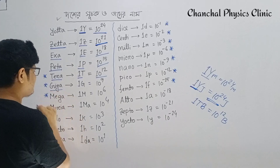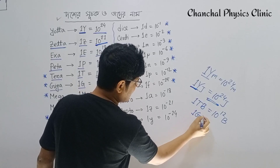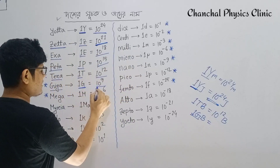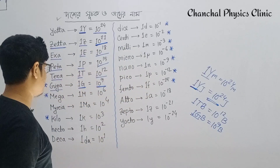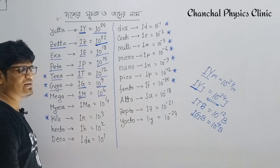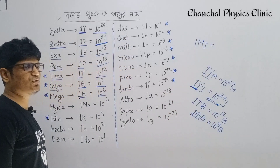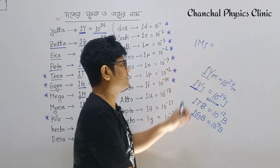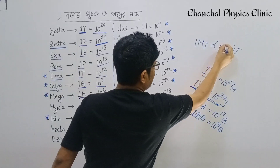Giga is 10 to the power 9. For example, a memory card of 1 Gigabyte is 10 to the power 9 bytes. Then Mega is 10 to the power 6. For example, 1 Megajoule equals 10 to the power 6 joules.